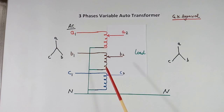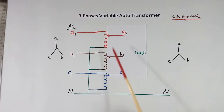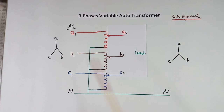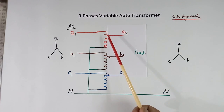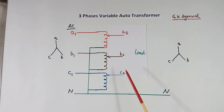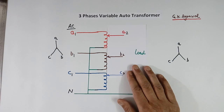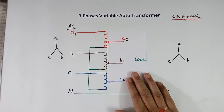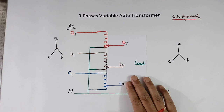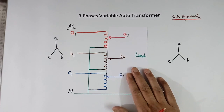This is a three phase variable auto transformer. In all three phases the output is variable, and input and load are connected in star. The arrangement is such that all three phases should move together, so that the output voltage at all three outputs is the same. They are mechanically locked. At present the voltage is at a certain level; moving down causes voltage to come down in all three phases, and moving up causes voltage to go up in all three phases.